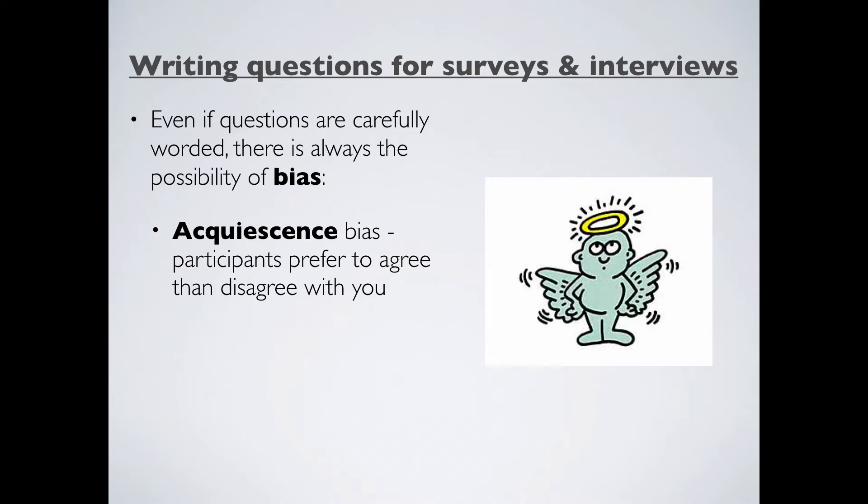One of these is something called acquiescence bias. This is something quirky about human nature in that participants, humans in general, prefer to say yes than they do to say no. Sounds a bit weird, but for example, if you were asked, do you have a good memory, you'd probably say yes. People generally like to agree with you. But if I also asked you the different question, are you always forgetting things, then you would also probably answer yes, even though those two questions are contradictory to one another. Participants rather like to say yes. Therefore, we have to have a balance of both positive and negative questions on the same issue, just to make sure that we can get around acquiescence bias.